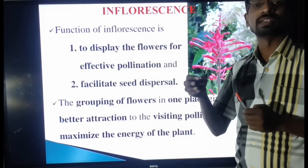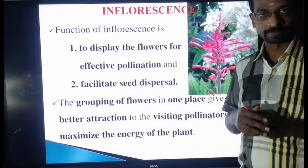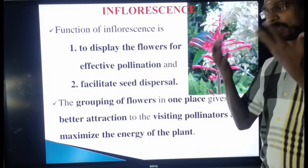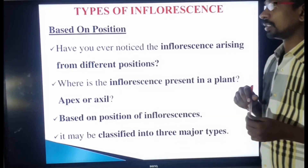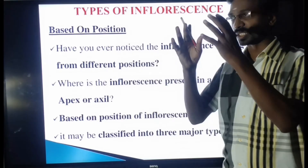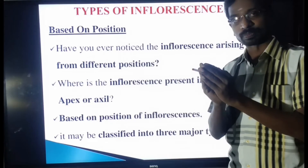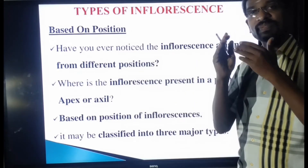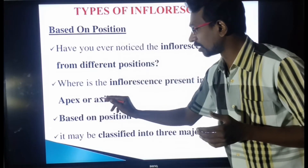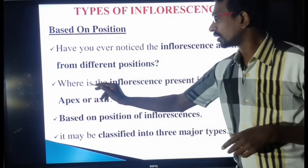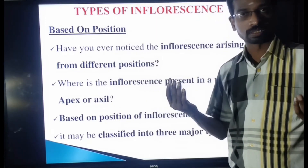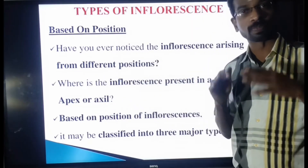Pollinators may be insects or birds, and various pollinators exist. The inflorescence maximizes the energy of the plant. The position of inflorescence is not common for all groups of plants — it varies from plant to plant. It may be axial or terminal (the apex region). The inflorescence can be present at both the apex and the axil of the plant in various groups.